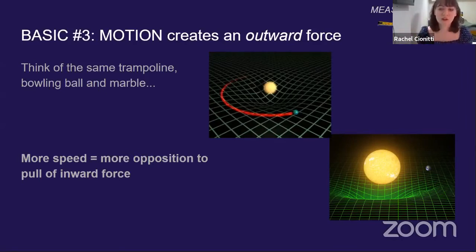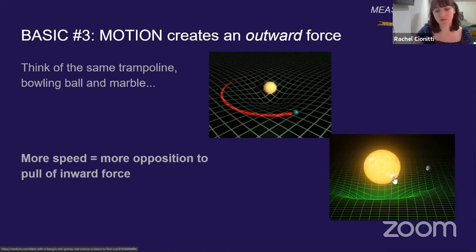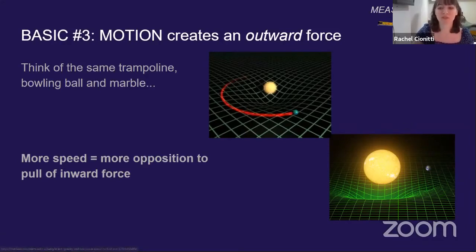With the Earth and other things in space that are in orbit, they're just going fast enough to not fall into the object. For example, the Earth is moving fast enough to not fall into the sun, but it's also moving slow enough that it's not completely leaving the sun and just going off in the other direction and doing its own thing.